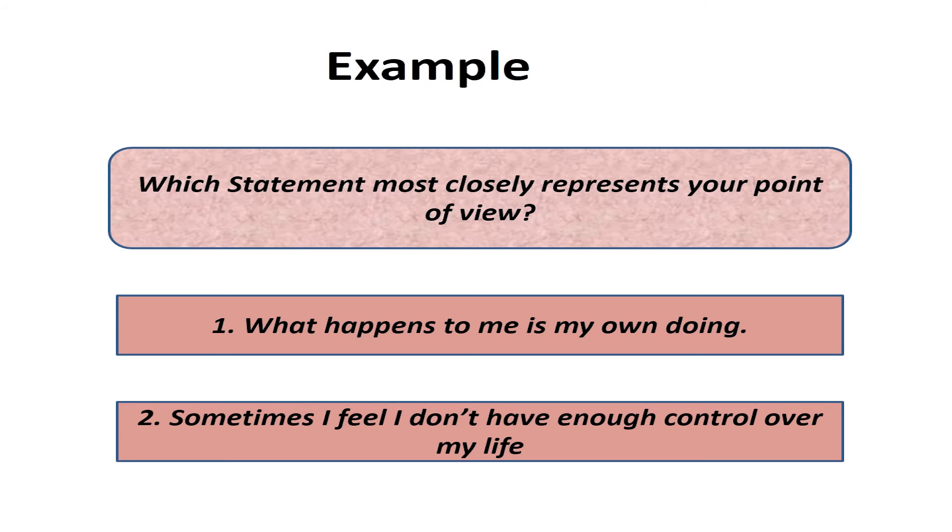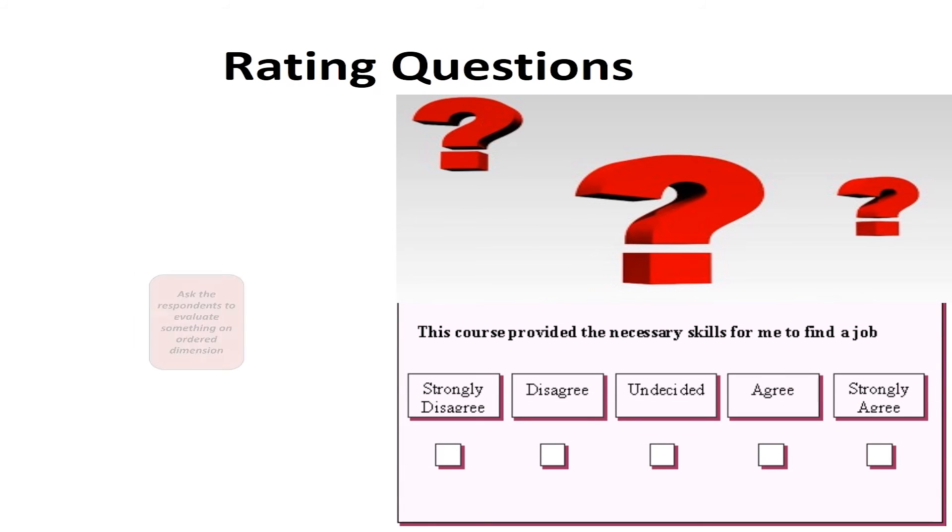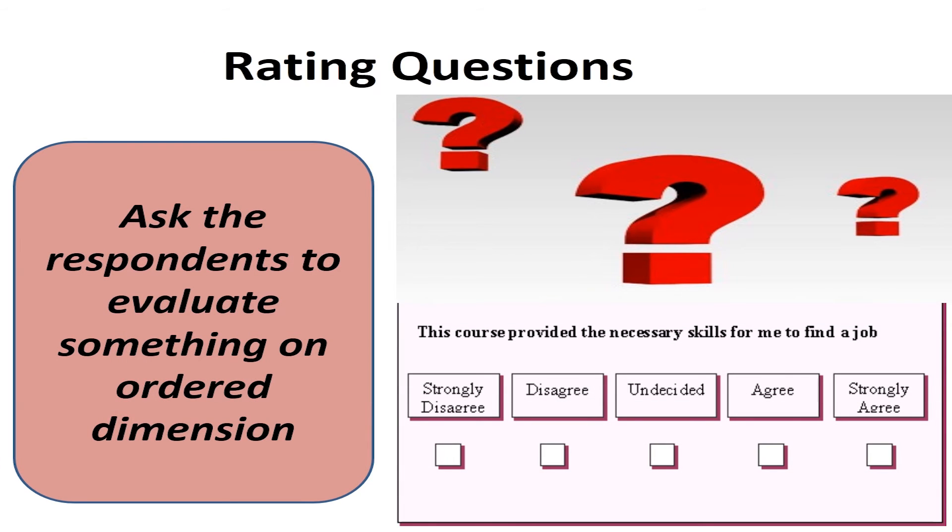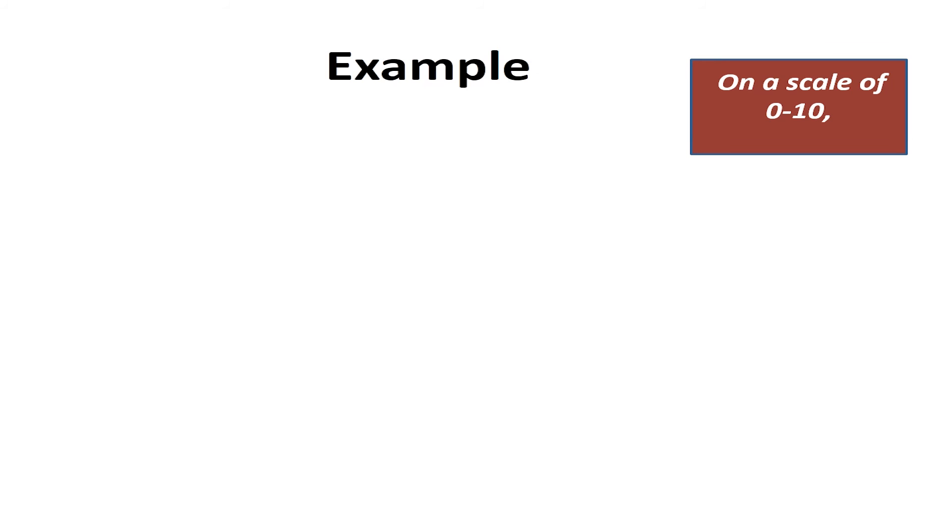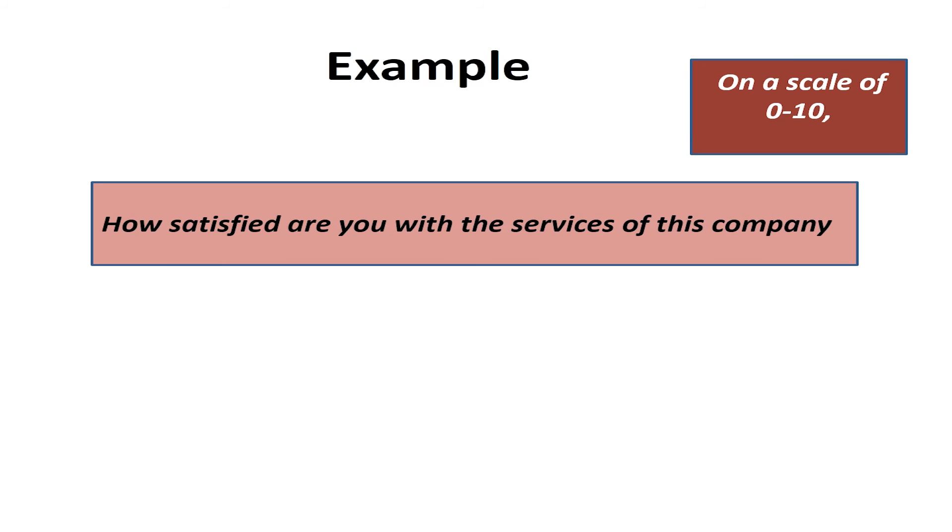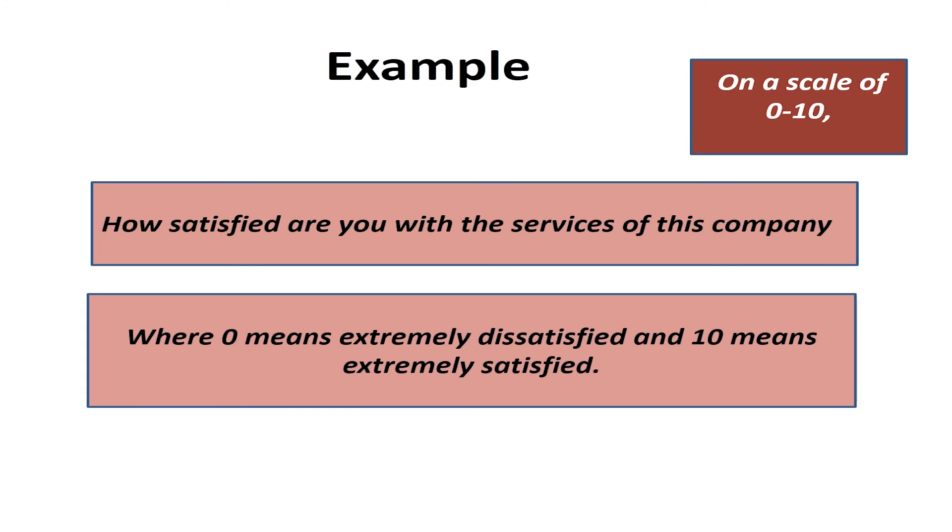The next type of questions are rating questions. Rating questions ask the respondents to evaluate something on ordered dimension. Both the ends are extremely opposite to each other. In other words, these type of questions are typically bipolar. An example of this type of question is, On a scale of 0 to 10, How satisfied are you with the services of this company? Where 0 means extremely dissatisfied, and 10 means extremely satisfied.